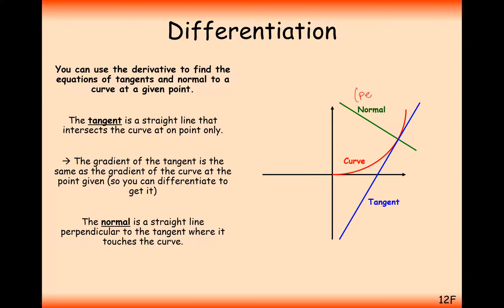When you see normal, think perpendicular. The key component for a perpendicular line is that the gradient is going to be at a right angle to the gradient of the tangent. Just remember that rule: the normal gradient times the tangent gradient is going to equal minus 1.